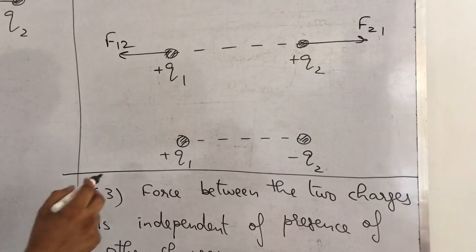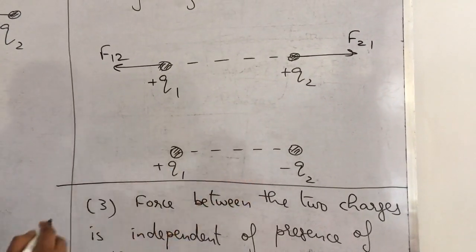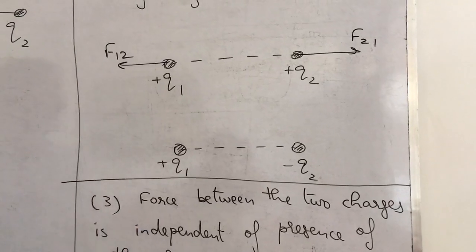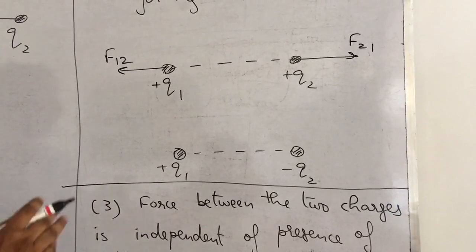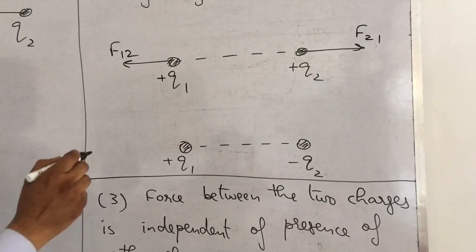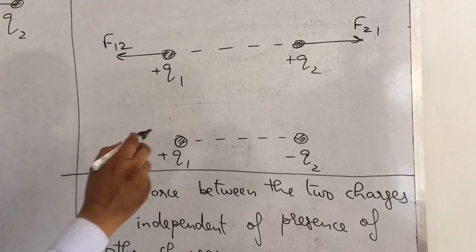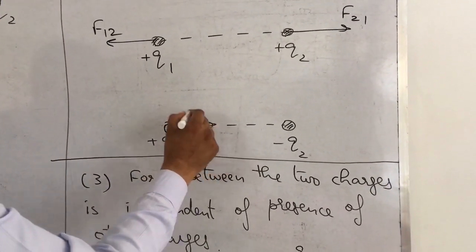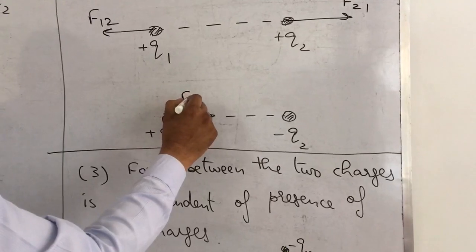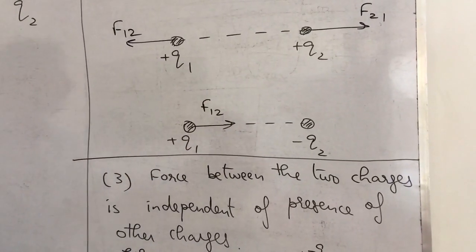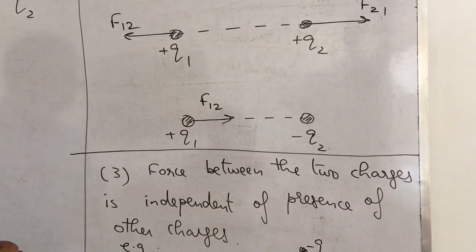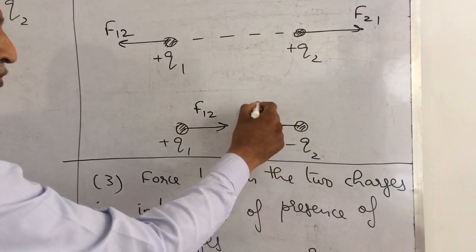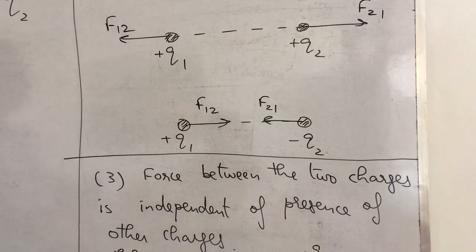Now consider Q1 and Q2 of opposite sign — taking Q1 as positive and Q2 as negative. In this case it is an attractive force, and this force is on the line joining the two charges. On Q1, the direction of force (force on 1 due to 2) should be toward Q2 because it is an attractive force. Similarly, force on Q2 due to Q1 (F21) should be toward Q1.